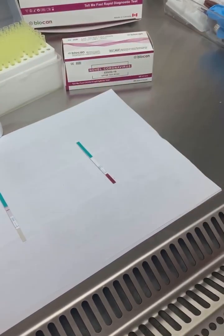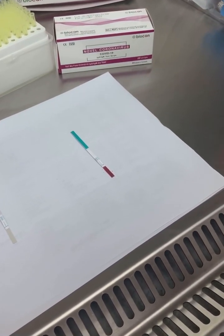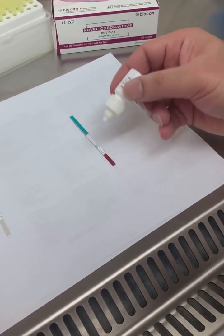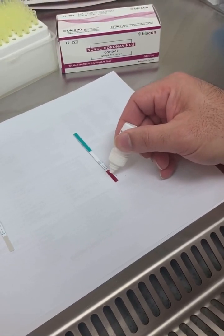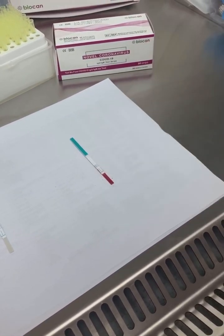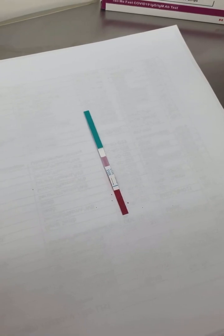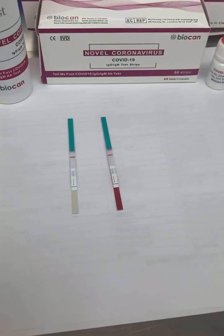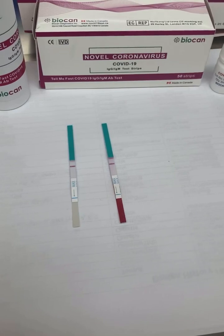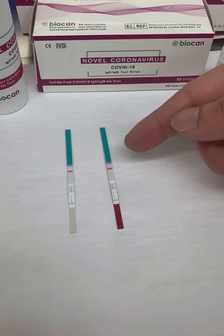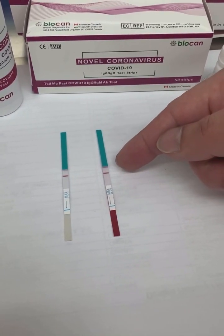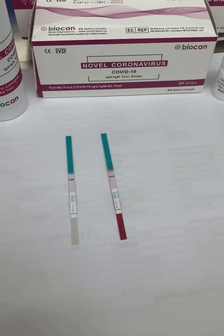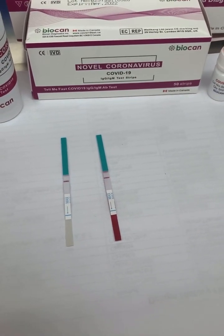Now add two drops of the buffer to the sample pad. As you can see, the sample is flowing through the test strip. You can read the test at 10 minutes. One line in the control area indicates that the test is negative. There is no IgG-IgM COVID-19 antibodies detected.